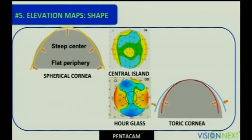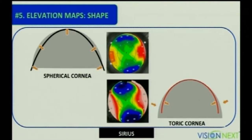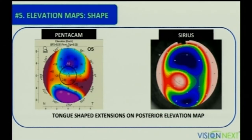Elevation maps show points on the cornea that are above or below a best-fit sphere. In Pentacam, a normal spherical prolate cornea will have a steep area in the center rising above the reference plane, flattening in the mid-periphery, and again steepening in the periphery — a central island pattern. A toric cornea will have the steep axis falling below the reference and flat axis rising above, giving an hourglass pattern. In Sirius, the reference is automated so that the apex of the reference matches the apex of the cornea, giving an hourglass pattern with approximately zero value in the center.